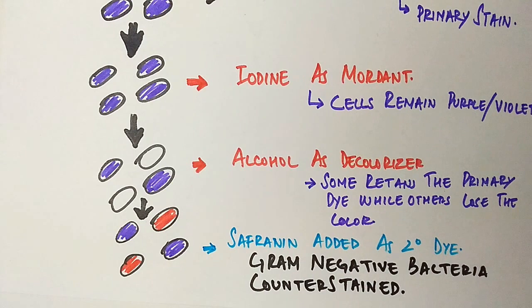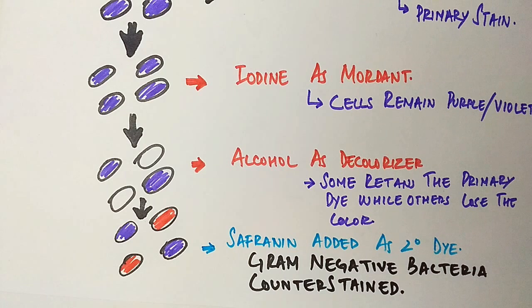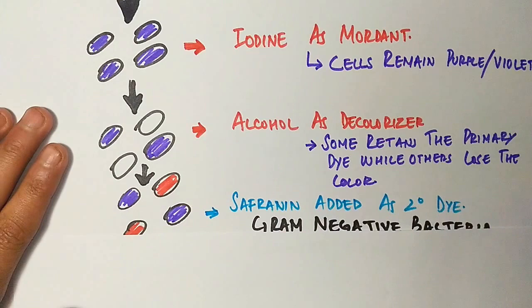So this was all about gram staining here. We have a mnemonic for it: Come In And Stain. The first letter of each word stands for crystal violet, iodine, alcohol, and safranin. Thanks, this was all about gram staining technique. Do share and subscribe to my channel.